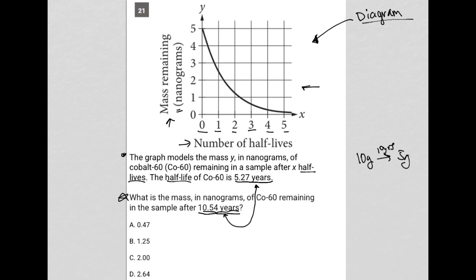So, that's all the tools that we have to answer this question. So, 10.54 is 2 times 5.27.